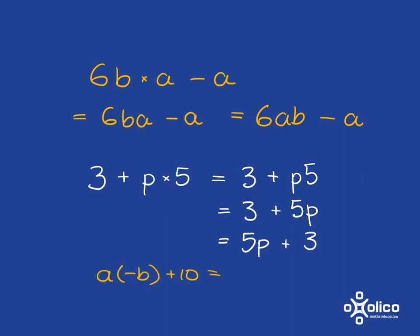If you have something like this, where you've got a with negative b in brackets, what you mean is a multiplied by negative b. And you can actually write that more nicely as you've just got a times b and it has to be negative. And so it will be nicely written as negative ab plus 10.